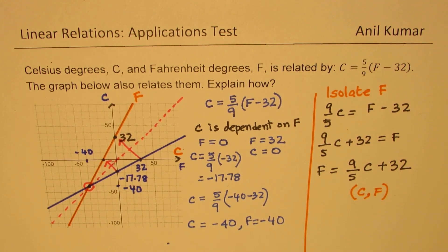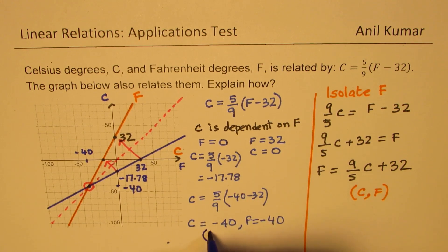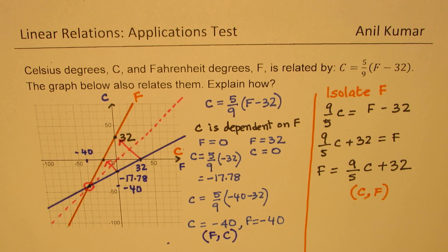In this case, the coordinate point will be C and F, and in the previous case, the coordinate points were F and C. That is how they are related, and this is an extremely important relation. I'd like you to go through this and understand how to work with the graph sometimes and with the formula sometimes to do easy conversion of temperature from one degree to the other.